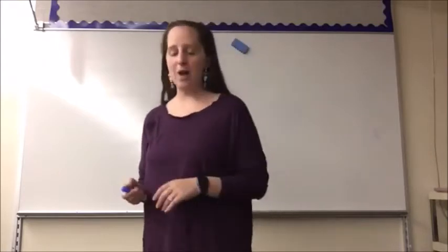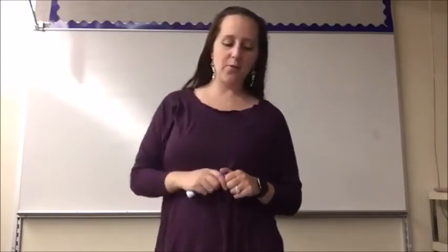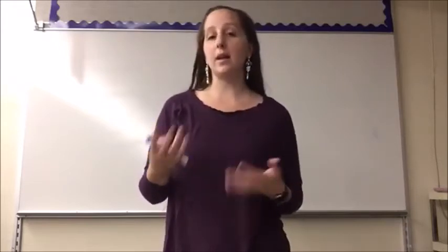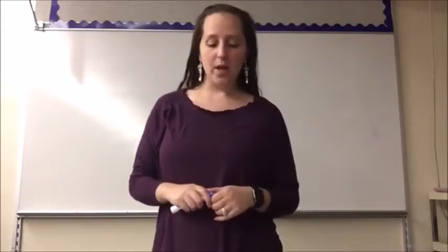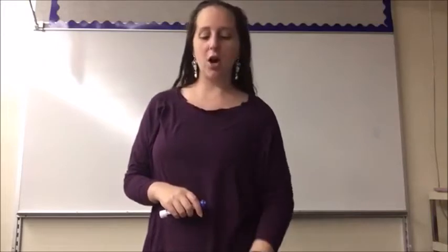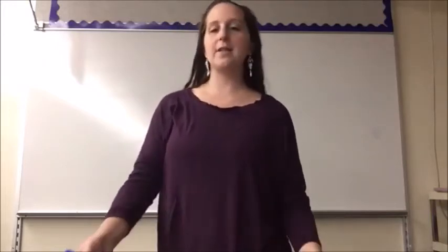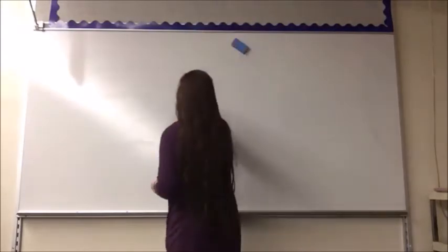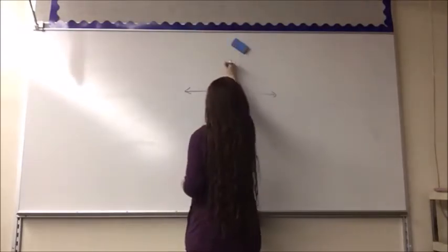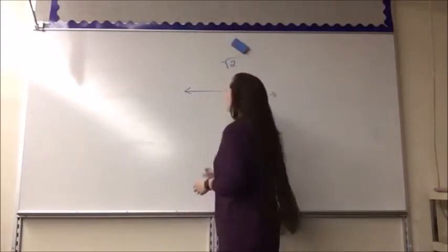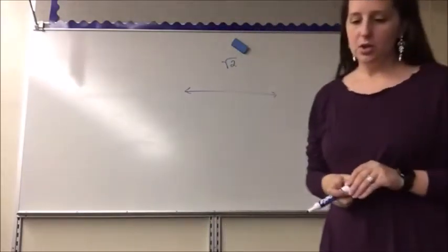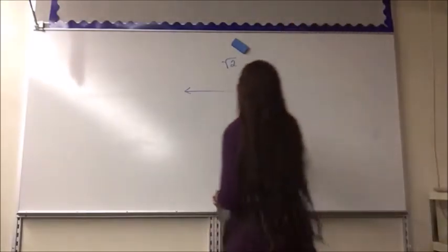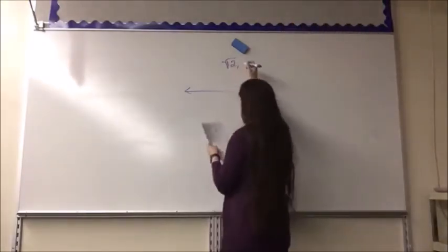Since the decimal form of an irrational number is approximate, we can estimate where values appear on a number line. For Example 2, I'm going to look at placing the square root of 12, pi, and 3.7671921 on a number line.